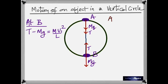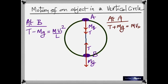When you write the equation at point A, since tension and weight are both acting downward toward the center, the net force will be the sum of the two. So T plus mg equals the centripetal force. The velocities at these two points are different — the velocity at B is V1 and the velocity at A is V2. Since the velocities are different, the tensions need to be different too, so let's call them T1 and T2.